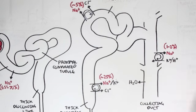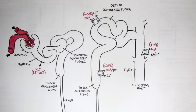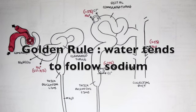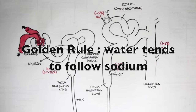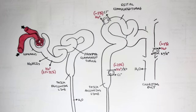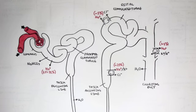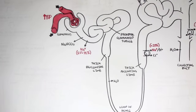What is very important to realize is that wherever along this tubule sodium is reabsorbed, water will be reabsorbed as well, because the golden rule of the kidneys is that water tends to follow sodium. Therefore, when we reabsorb water and sodium, this will increase blood pressure. Diuretics prevent the reabsorption of sodium and water somewhere along this tubule and therefore aim to decrease blood pressure.